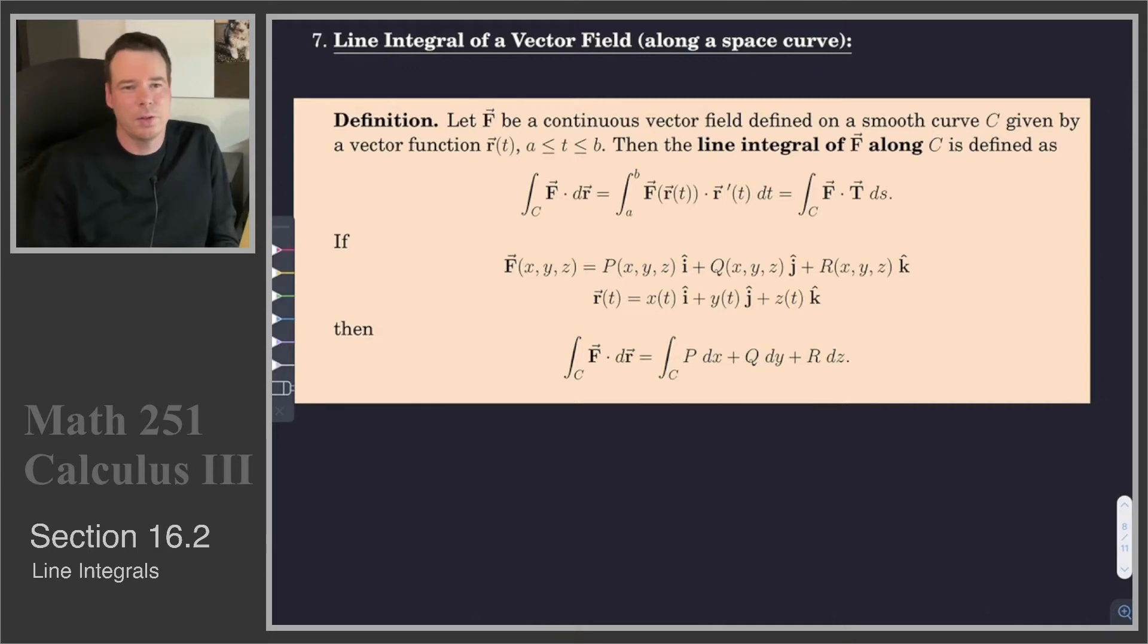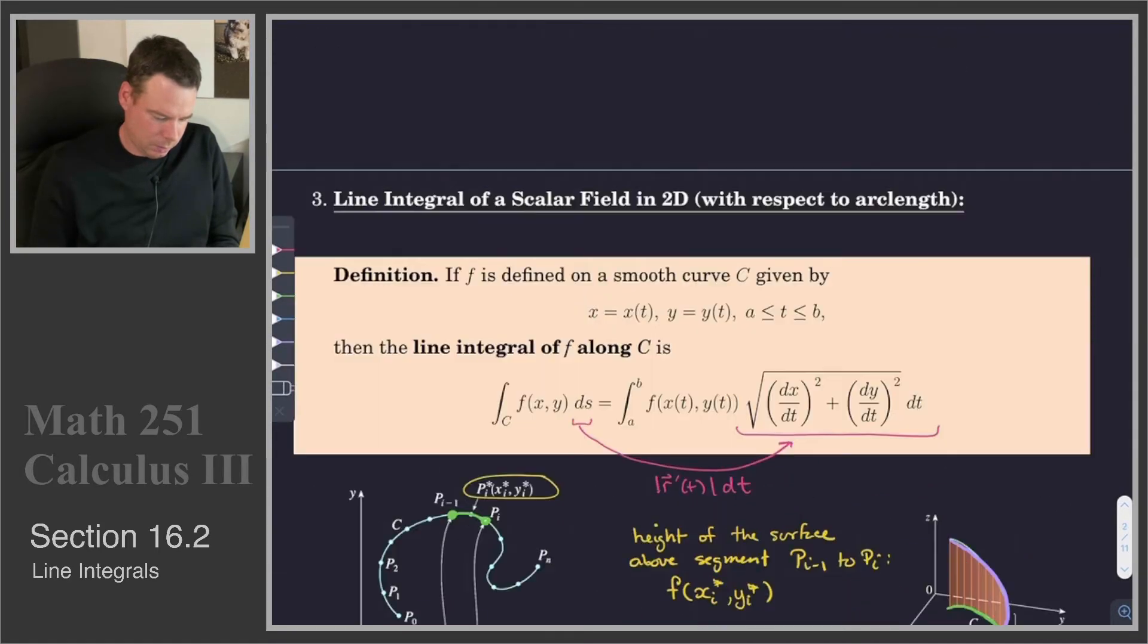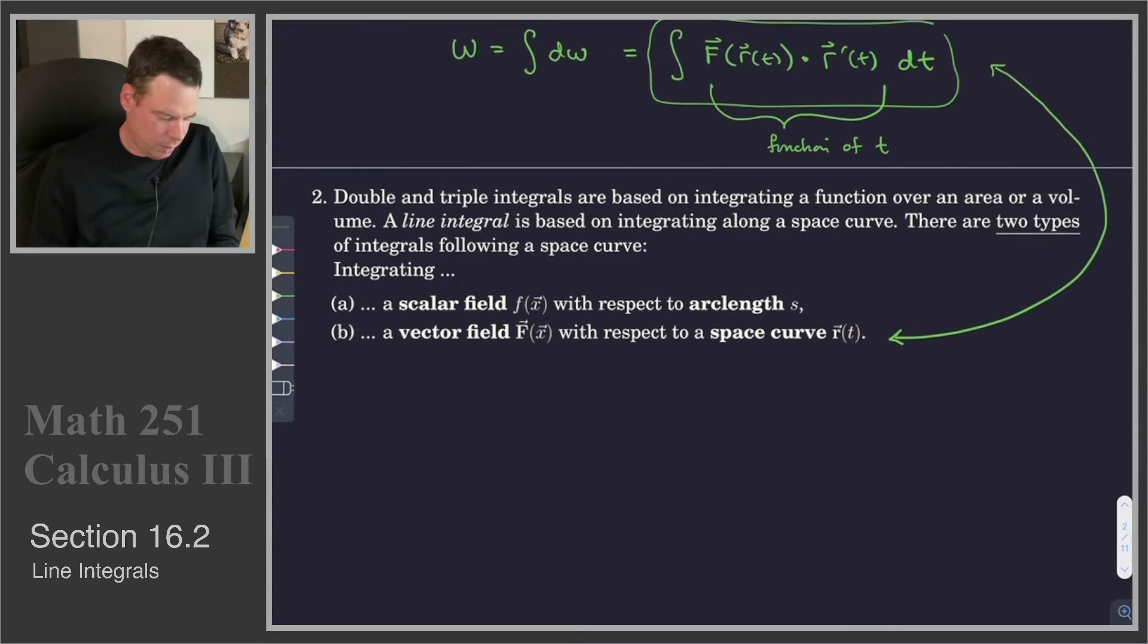Now we look at the other type of line integral that we have. If we scroll back up to where we introduced the two kinds of line integrals, we had an integral of a scalar field with respect to arc length s. We've just dealt with those two-dimensional and three-dimensional cases.